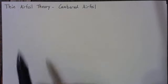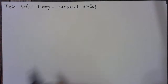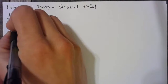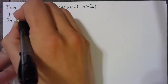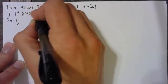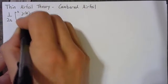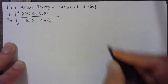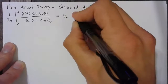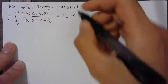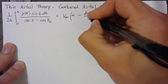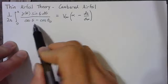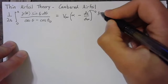In this lesson, we're going to be applying thin airfoil theory to a cambered airfoil. We'll start off once again with our thin airfoil theory equation, which is 1 over 2π times the integral from 0 to π of γ(θ) times sin(θ) dθ, all over cos(θ) minus cos(θ₀). Before, this was simply equal to V∞ times α, but because we're interested in the camber of the airfoil, we now have to include the dz/dx term. This was originally a function of x, but since we've transformed everything else into θ coordinates, it now has to be a function of θ₀.